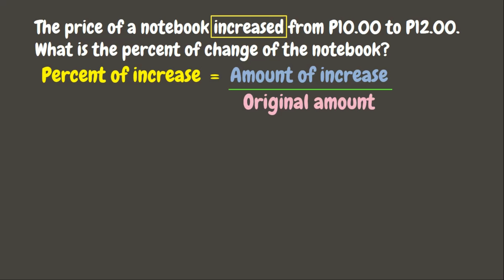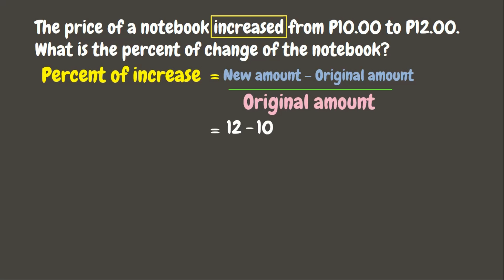To get the amount of increase, we need to subtract the original amount from the new amount. This gives us our formula: percent of increase equals new amount minus original amount, divided by the original amount. Now let's substitute the given. The new price is twelve pesos minus the original price of ten pesos, divided by the original amount which is ten.